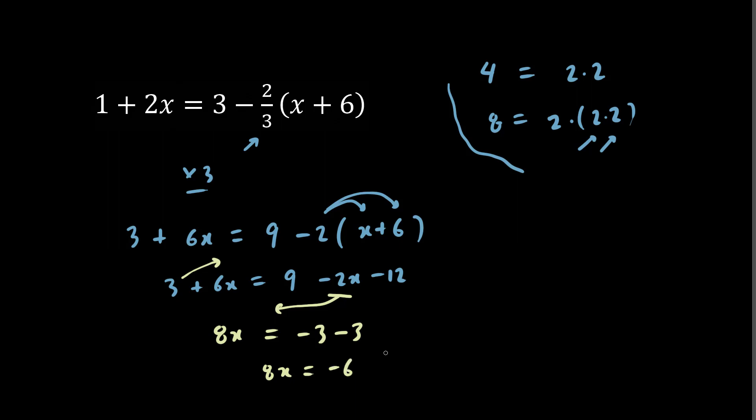We have 8x equals negative 6. Thus, dividing both sides by 8, we have x equals negative 6 over 8. And it's always a good idea to simplify. Dividing top and bottom by 2, we have negative 3 fourth, which is our final answer.